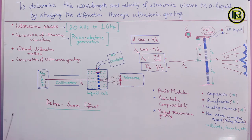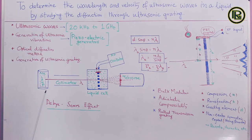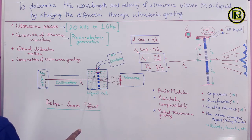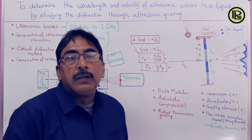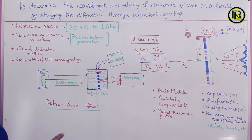Now I come to the experimental arrangement. The entire setup is called the optical diffraction method, obtained by Debye and Sears, and the phenomenon is called the Debye-Sears effect. We have a rectangular liquid cell — basically a tank — which contains a liquid; for our case, we are going to use white kerosene. A piezoelectric crystal is attached near one wall and remains immersed within the liquid.